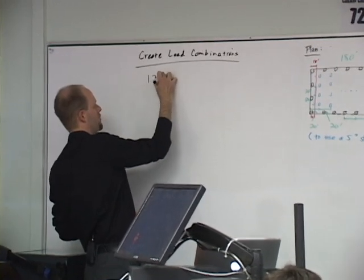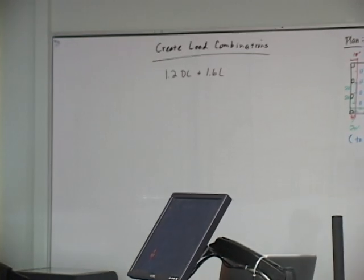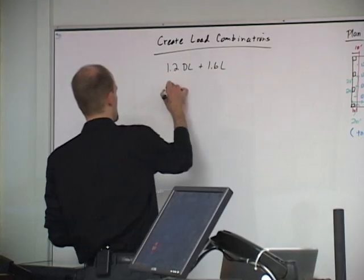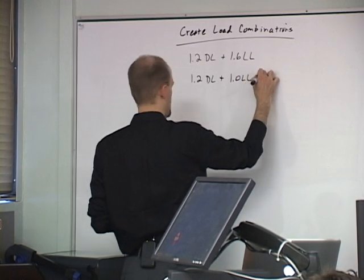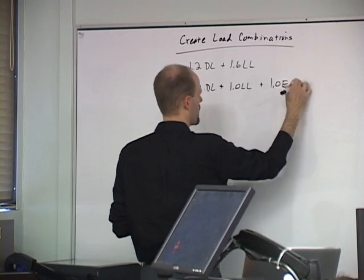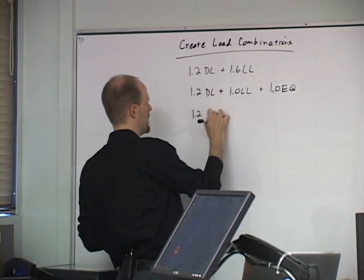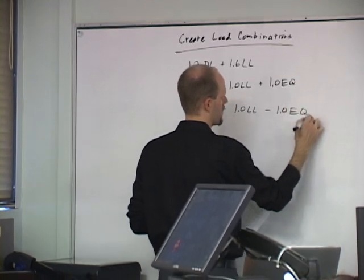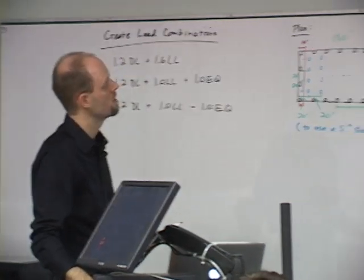Let's just do our basic 1.2 dead plus 1.6 live. And then we also put in some earthquake loads. It's 1.2 dead plus 1.0 live plus 1.0 earthquake. And the earthquake can go the other direction also, so we're going to do 1.2 dead plus 1.0 live minus 1.0 earthquake, which just puts the earthquake in the opposite direction.